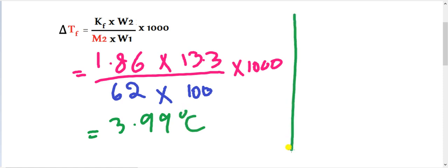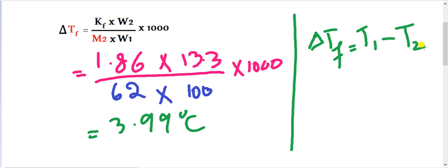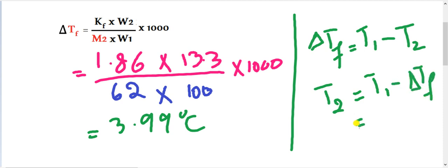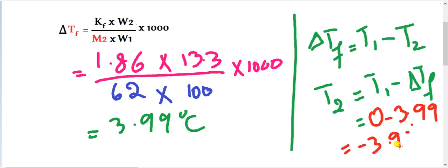Now calculate freezing point. Depression in freezing point equals T1 minus T2. We find T2 equals T1 minus Del Tf. T1 (water freezing point) is 0 degrees centigrade; Del Tf is 3.99 degrees centigrade. So the freezing point of solution is minus 3.99 degrees centigrade.